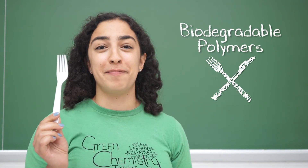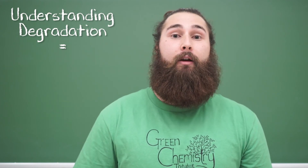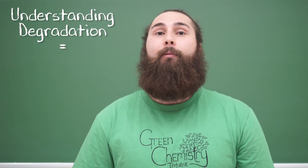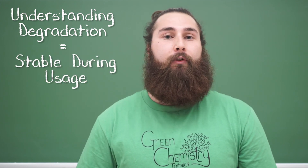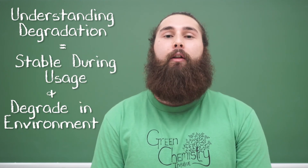You can see how designing chemicals to break down can be very challenging, but many researchers around the world are working on this right now. One example is biodegradable polymers that are used in plastics, for example, compostable cutlery. Principle 10 is currently one of the largest challenges in green chemistry. If scientists designing new chemicals can understand more about the mechanisms that degrade them, we may be able to make new chemicals that are stable for their desired usage but break down in the environment.